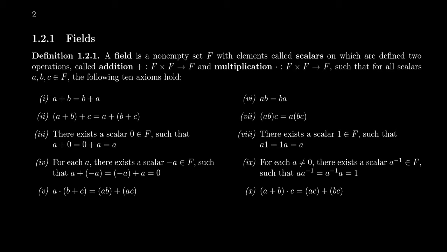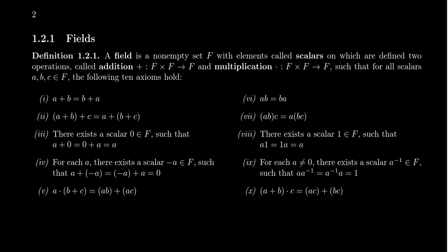Scalars are numbers, but there are different types of numbers — scalars are only just one type. A scalar will be a number that belongs to a field. The field is a set of elements called scalars, but also the field will contain two operations, which we call addition and multiplication. The symbol we use to describe addition on a field will be a typical plus sign. The symbol for multiplication might be a dot, an X, a star, or simply juxtaposing two letters together with no symbol — that represents multiplication.